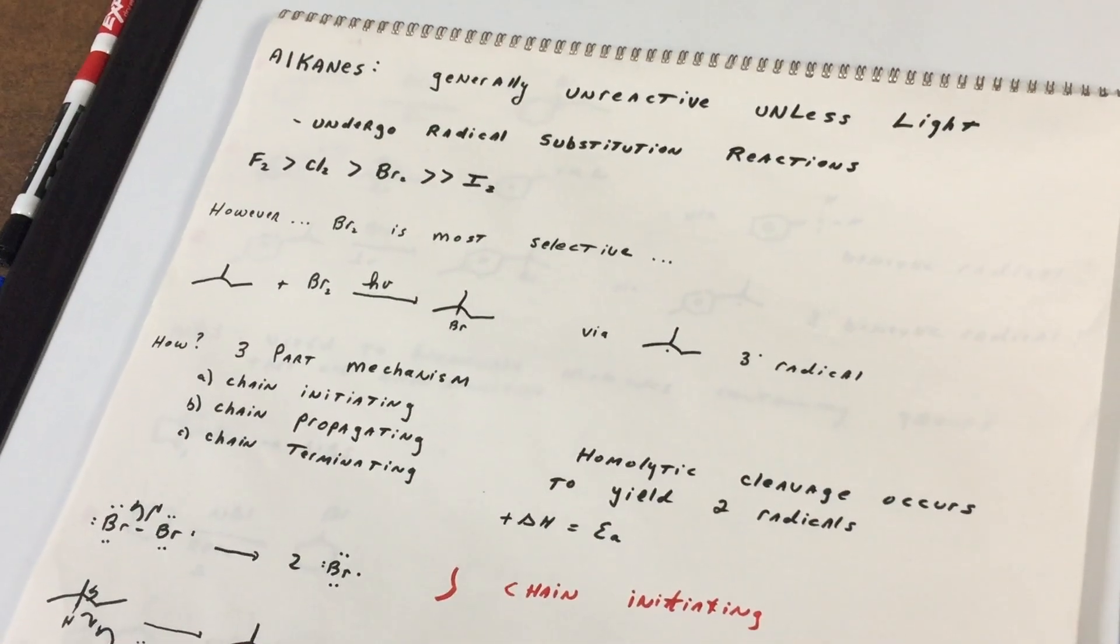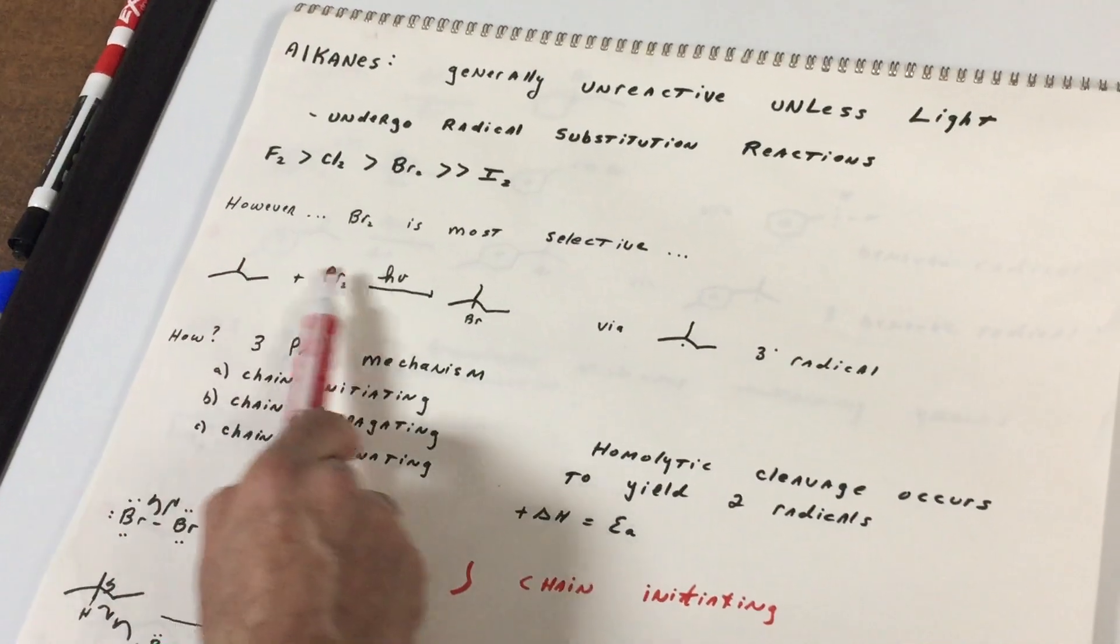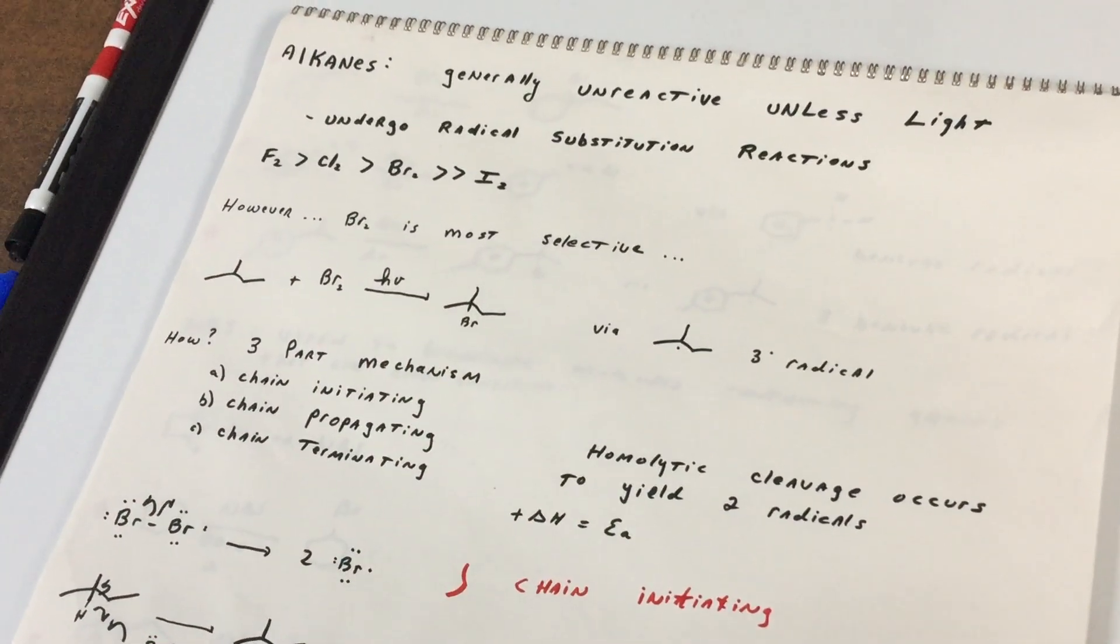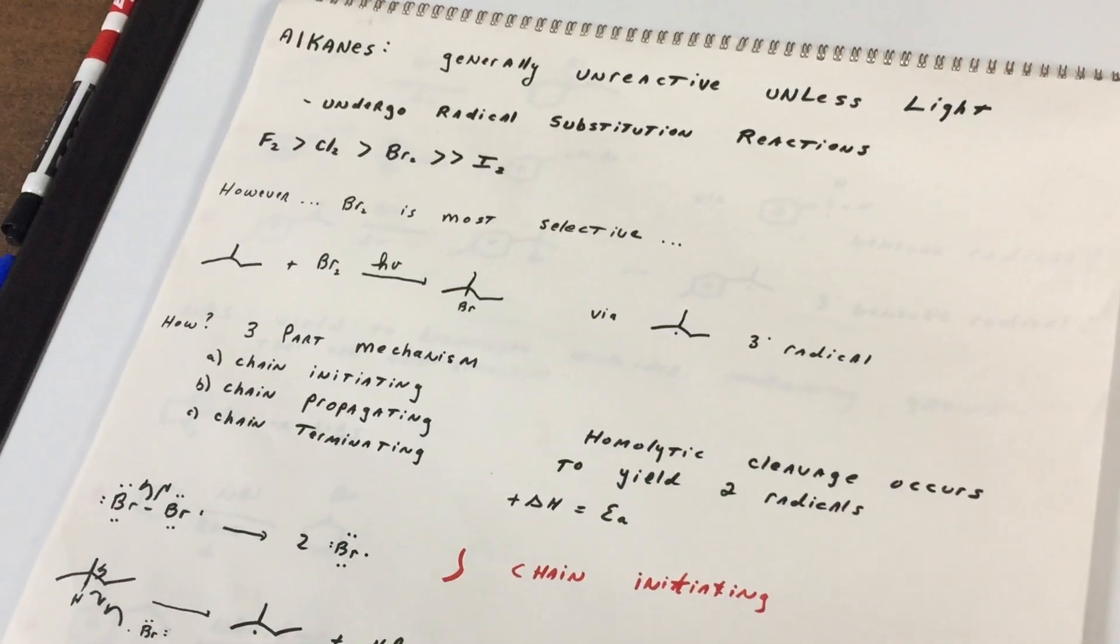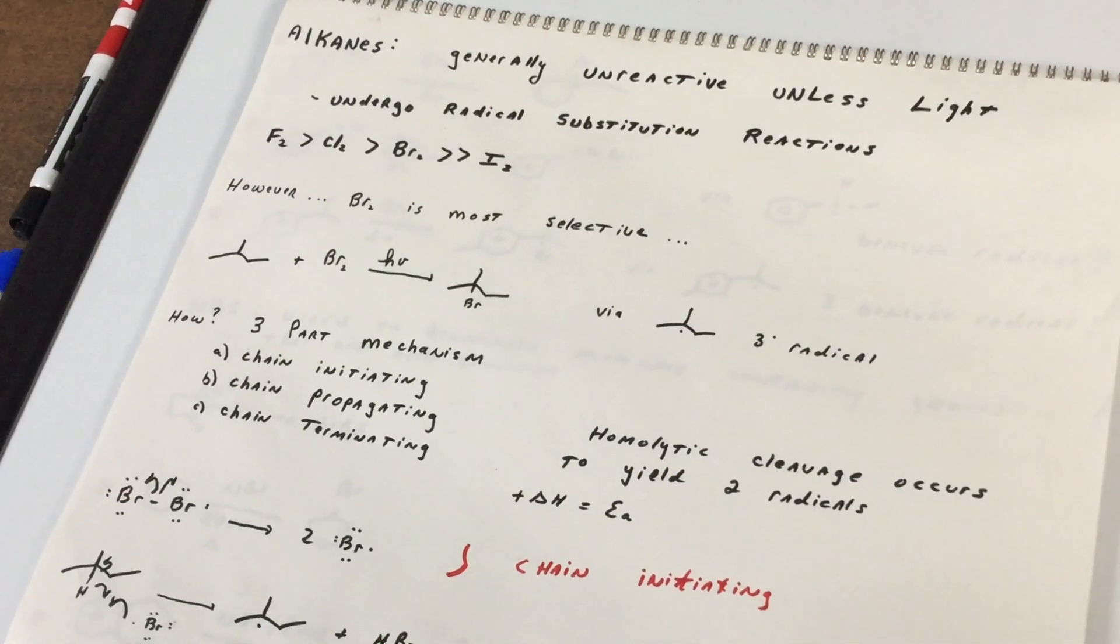There's three parts to this mechanism. So what we're going to do is focus on this above example, on how this reaction occurred. We're going to have a chain initiating step, then we're going to go through what we call the propagating steps, then the terminating steps.